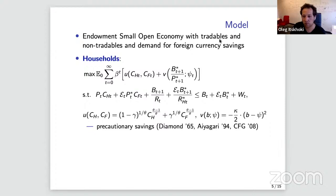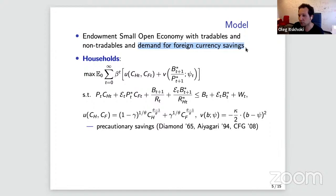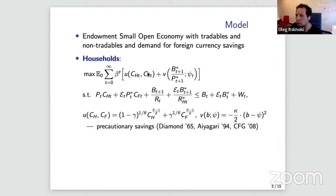The key additional ingredient is extra demand for foreign currency as a savings vehicle. The household sector consumes the domestic good — there's an endowment of the domestic good each period — and imports. The truly endogenous variable determined together with the exchange rate is the quantity of imports. There can be sanctions imposed on imports that change the effective prices you face to buy a bundle of imports.